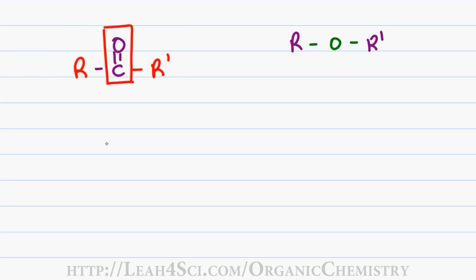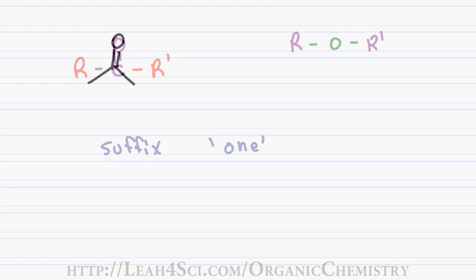To name a ketone, you follow the rules for standard IUPAC naming and add the suffix O-N-E or one to your molecule. Let's start with a simple example.